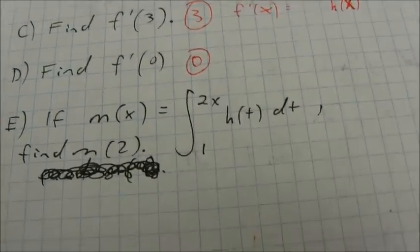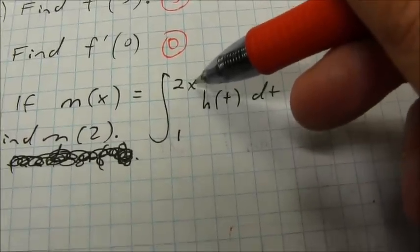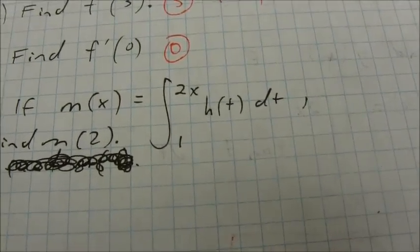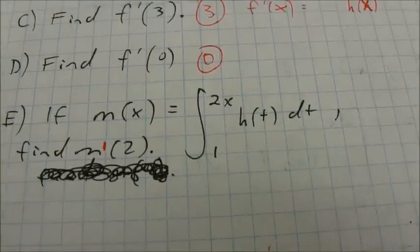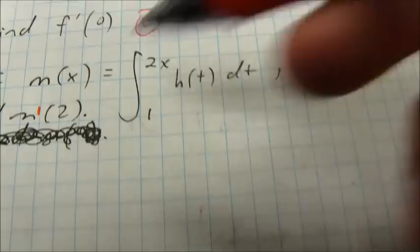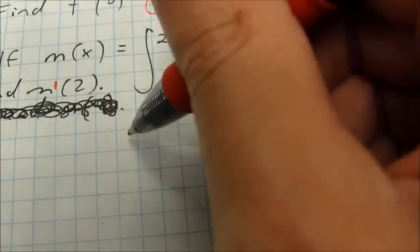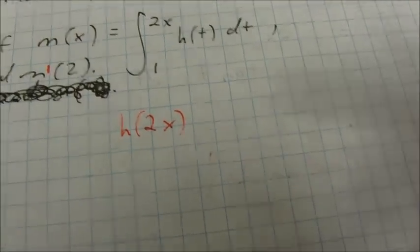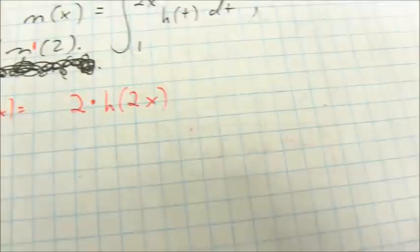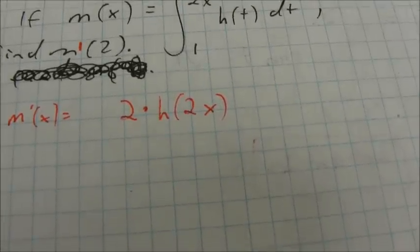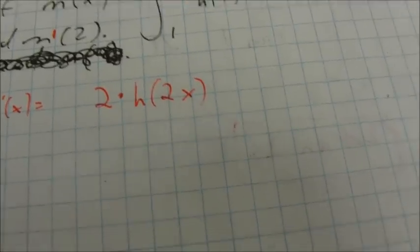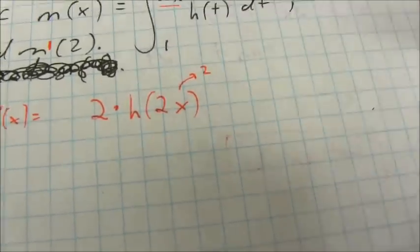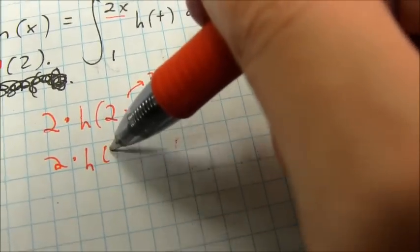Finally, I have another function defined from 1 to 2x. Notice that has a derivative of an inside function of 2 of h of t dt, and I want to find m prime of 2. The derivative of this integral is going to be h of 2x times the derivative of the inside function, which is 2. So that gives me the value of m prime. I substitute in 2, and that gives me h of 4. I can go back to my graph — h of 4 has a value of 3.